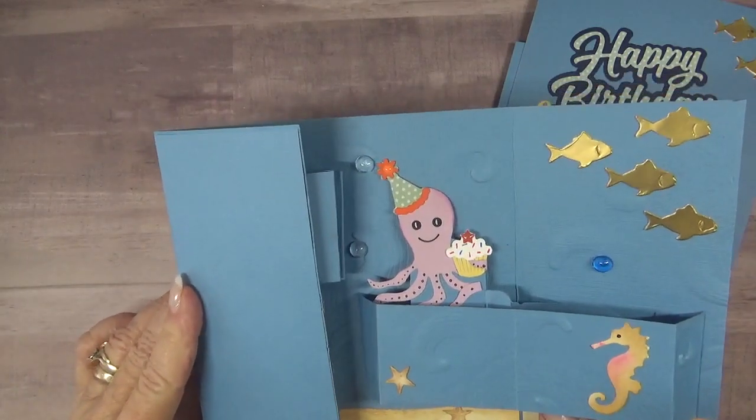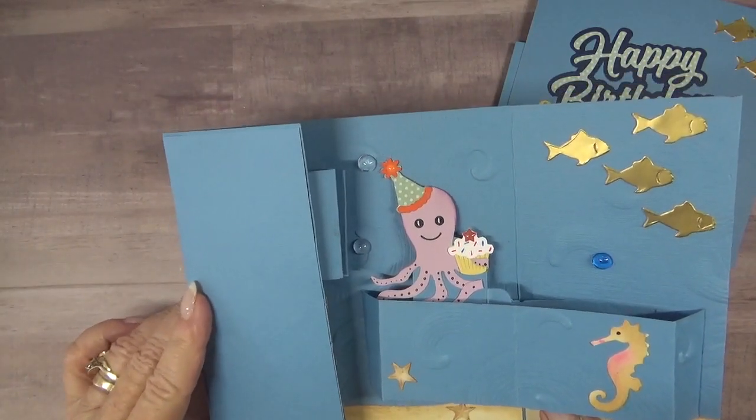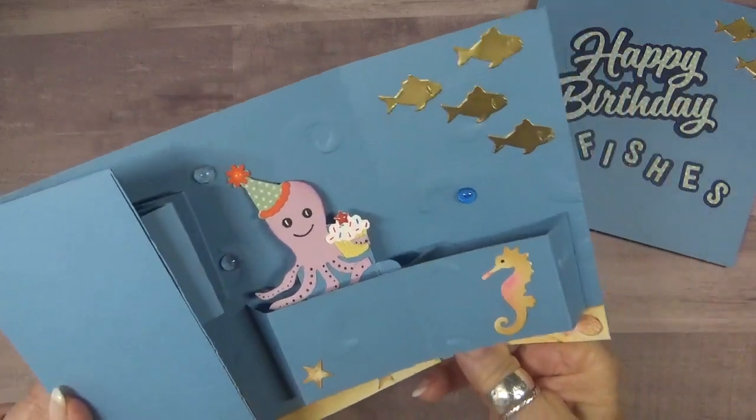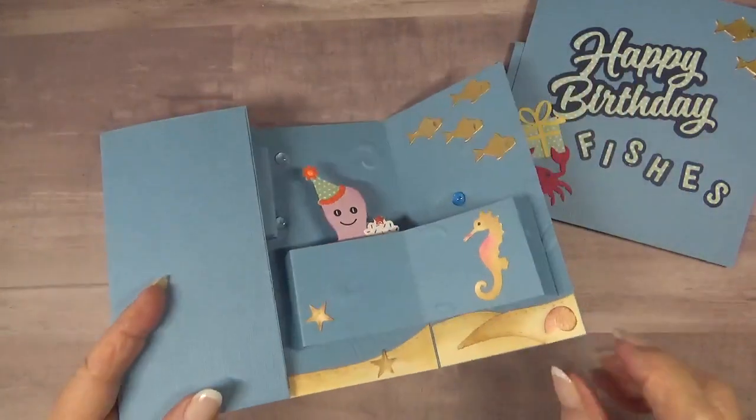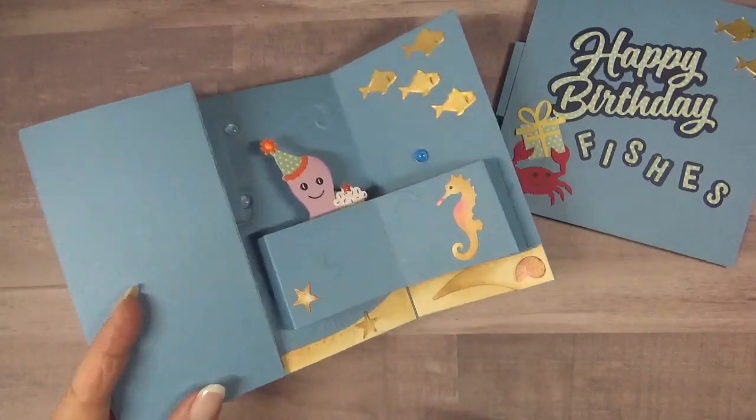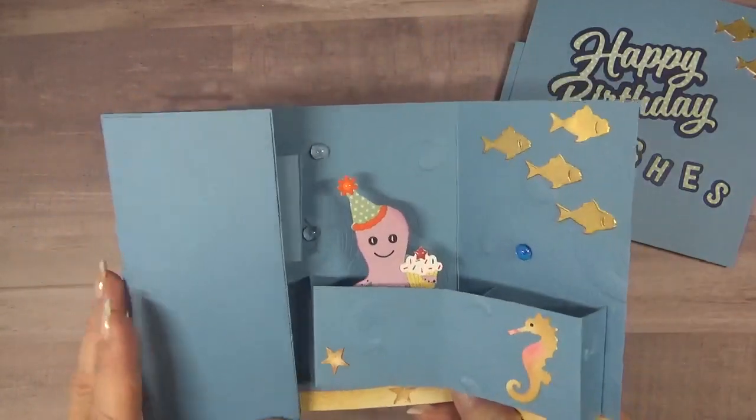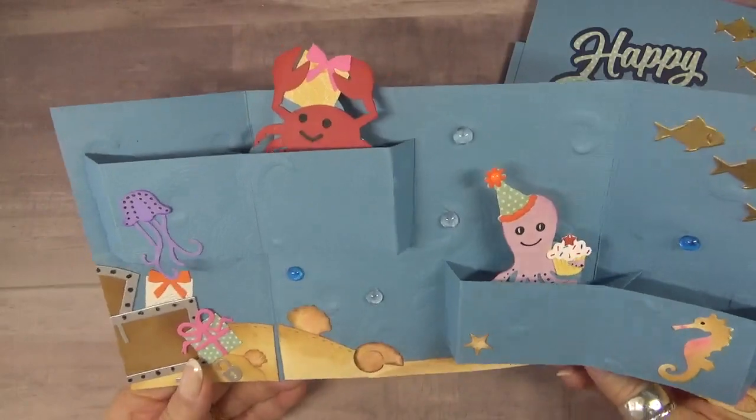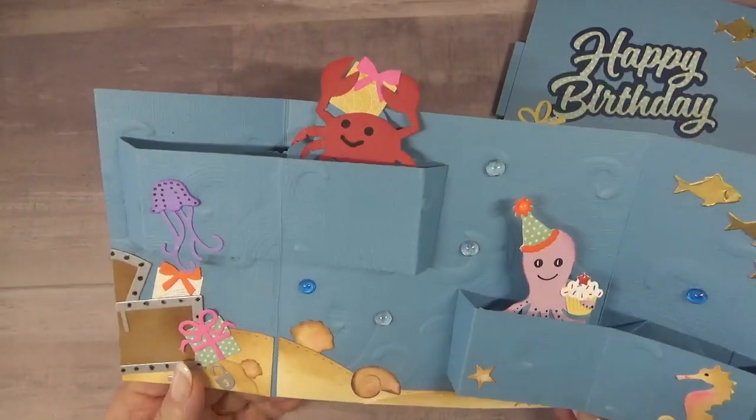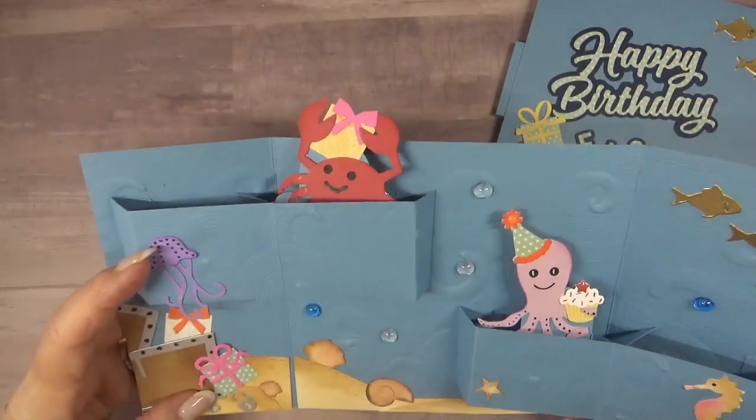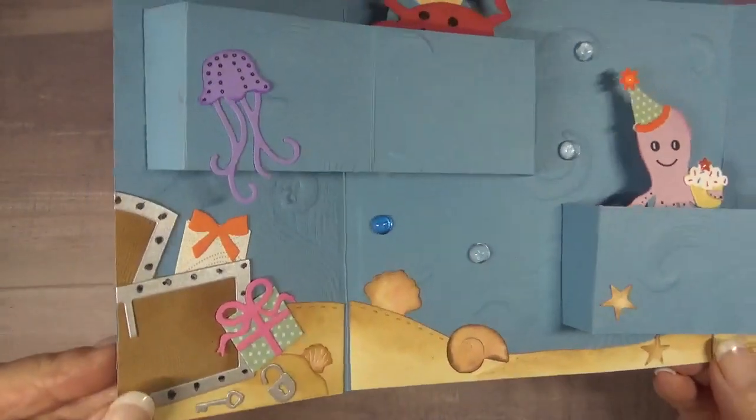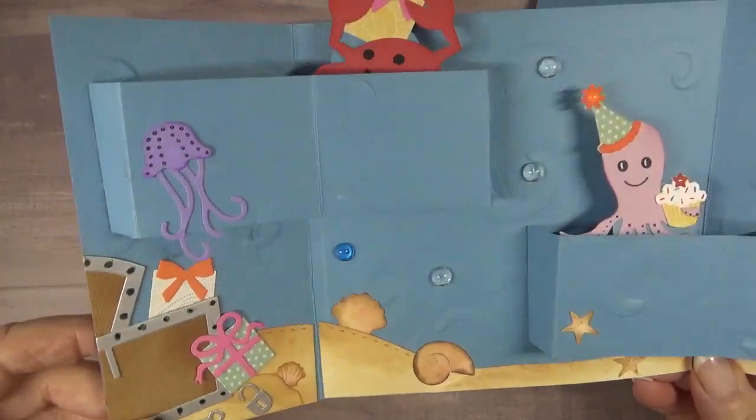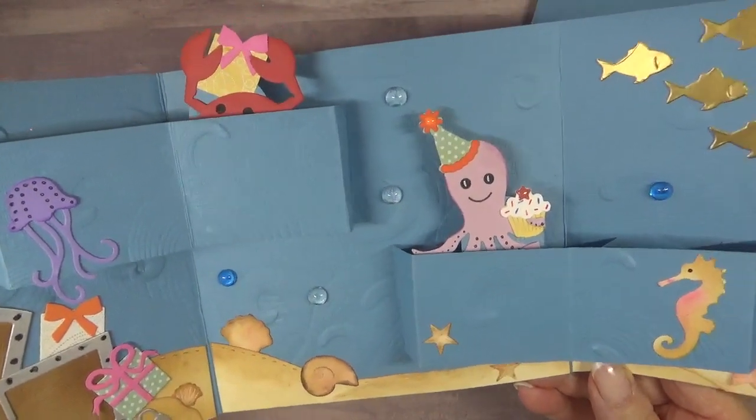Little octopus popping right up with her cupcake. Isn't she cute in her birthday hat? Got a little school of fish over here. Seahorse. And as you can see I put the bottom of the ocean right along here with some shells and some fish. On this side I got that cute little crab popping up with a birthday gift. Little jellyfish over here. Then I got the treasure chest with some gifts popping right out of it. And then of course more bubbles.